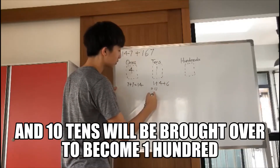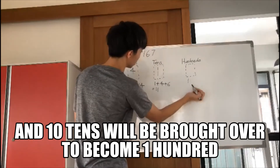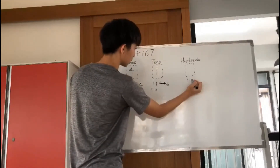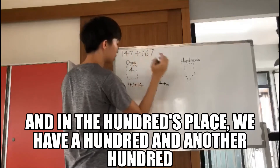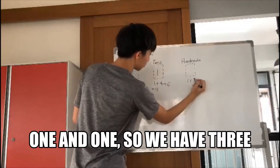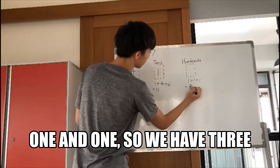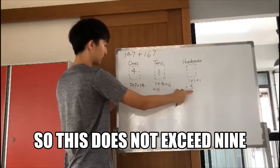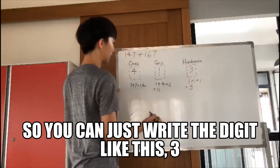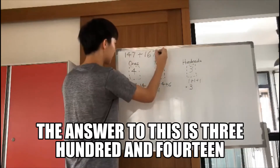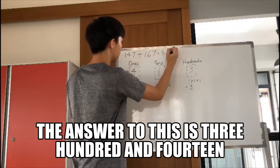Ten tens will be brought over to become one hundred. And in the hundreds place, we have a hundred and another hundred — so one and one. We have three, which does not exceed nine, so we can just write the digit. Three. So the answer for this is three hundred and fourteen.